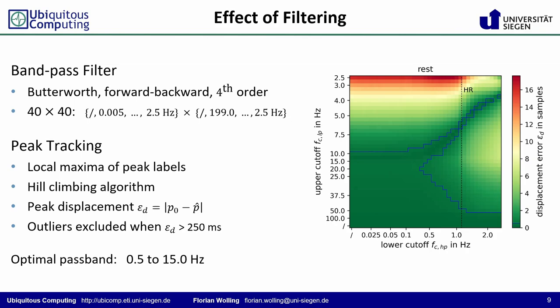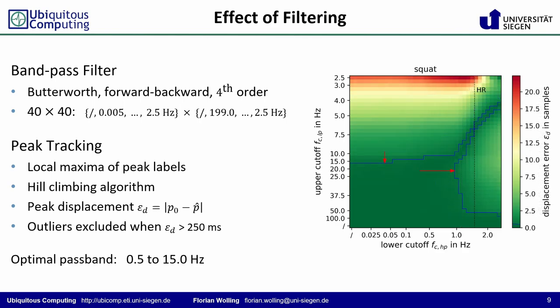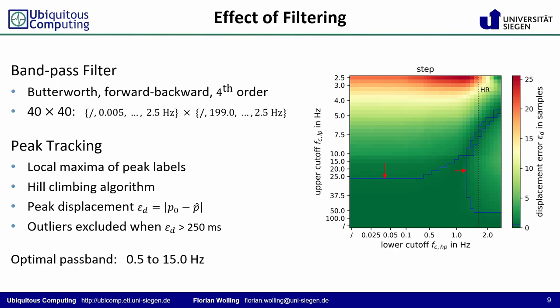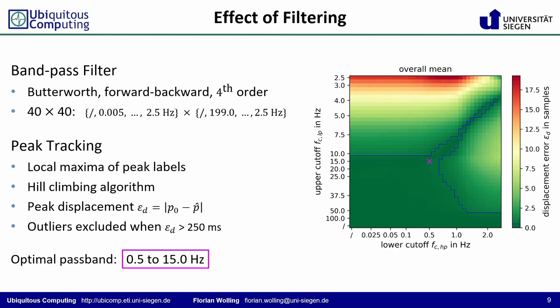By means of the annotations, we first investigated the effect of filtering on the peak positions in the raw signal, allowing us to estimate the maximum achievable accuracy of algorithms. We applied 40 times 40 non-equally distanced filter configurations to all time series, then tracked the displacement of the local maxima associated with the labeled peaks. On the right, you can see the displacement error for the subset of rest. With increasing average heart rate — here for squat — the optimal region shifts along the x-axis of the lower cutoff, and here for step, it also shifts along the y-axis of the upper cutoff. Consequently, the optimal filter configuration, marked with a pink cross, is a trade-off from these three cases.